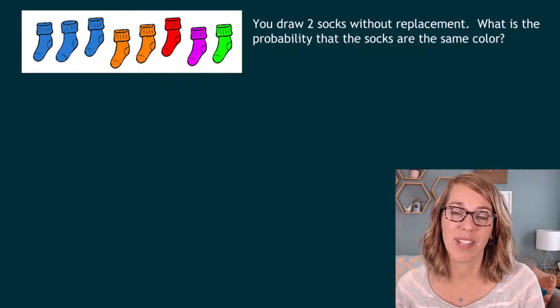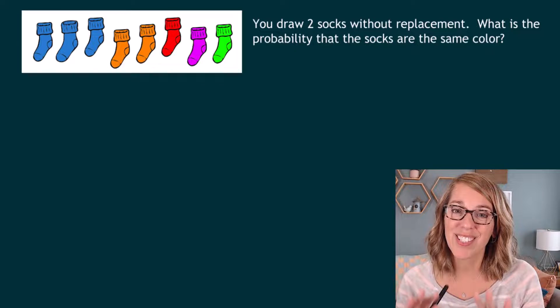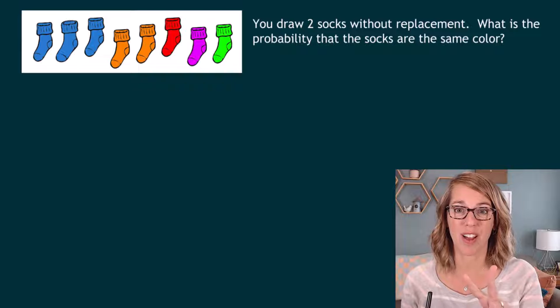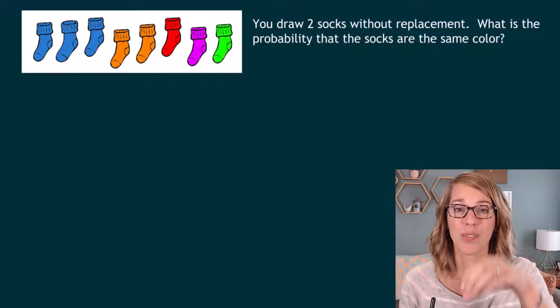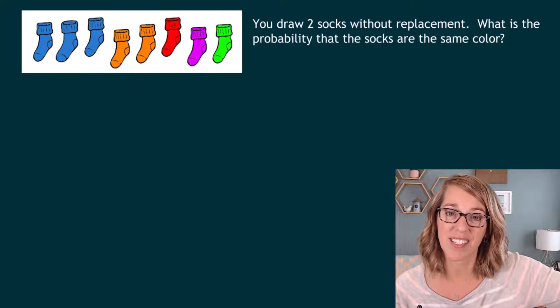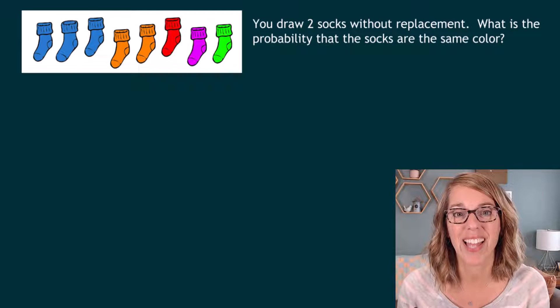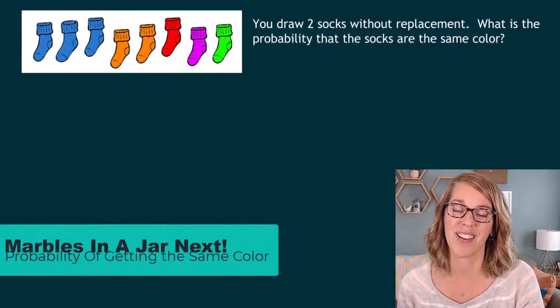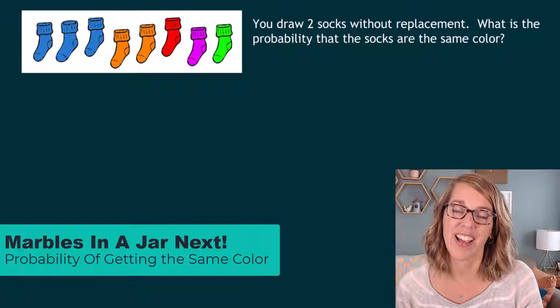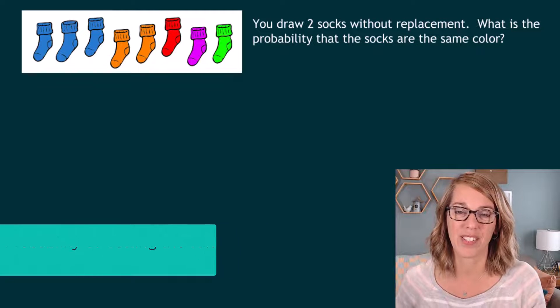Let's look at probability without replacement to get the same color. In this first example, we're going to draw two socks without replacement. So we're going to draw that first sock, put it aside, and then go back to what's left to draw the second sock. We want to know the probability of getting the same color sock.